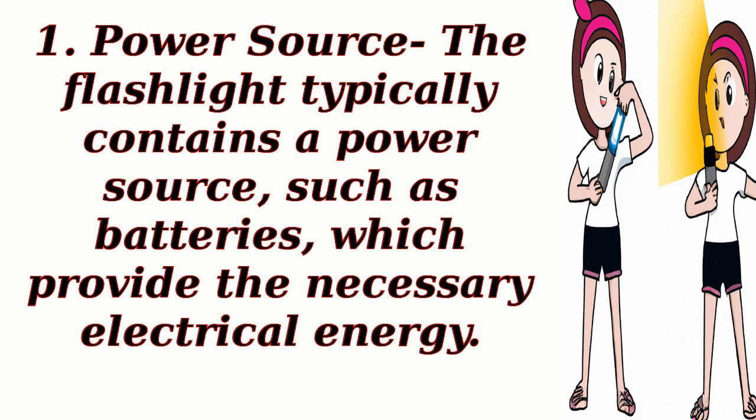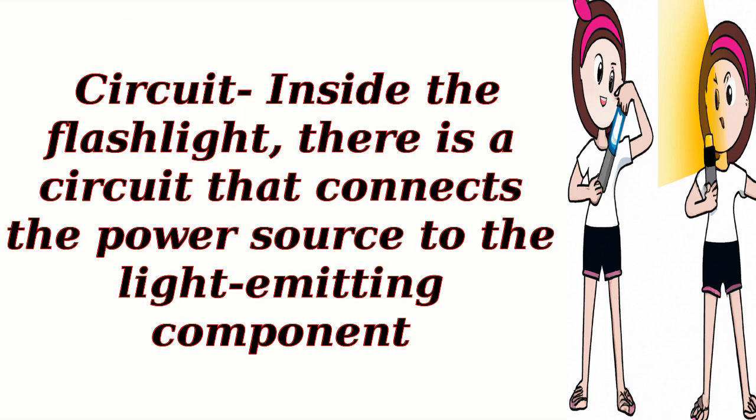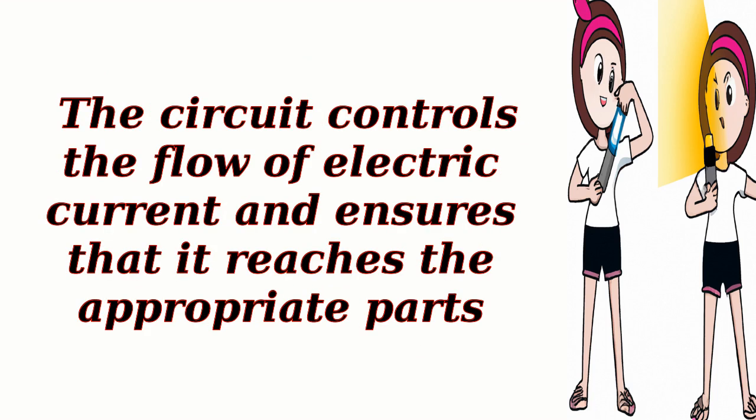Power source: the flashlight typically contains a power source, such as batteries, which provide the necessary electrical energy. Circuit: inside the flashlight, there is a circuit that connects the power source to the light-emitting component. The circuit controls the flow of electric current and ensures that it reaches the appropriate parts.